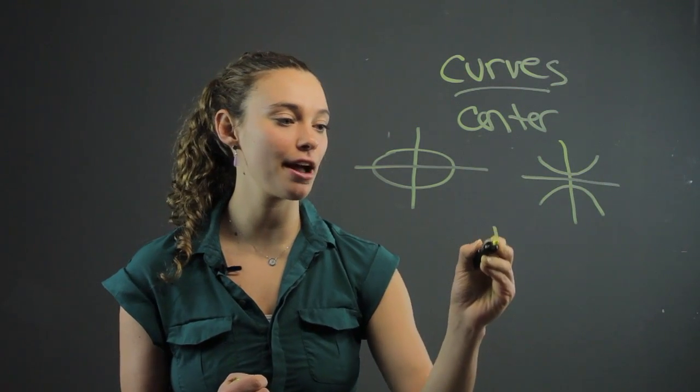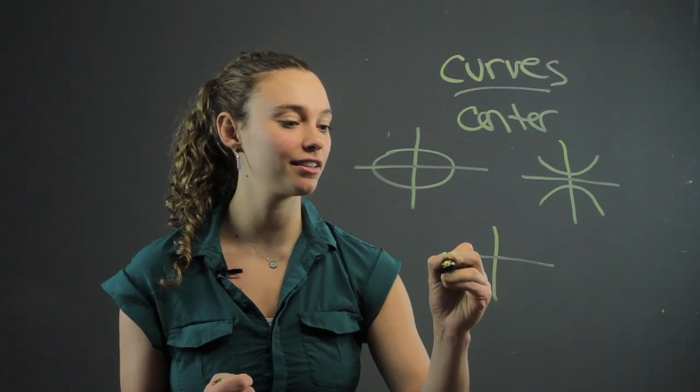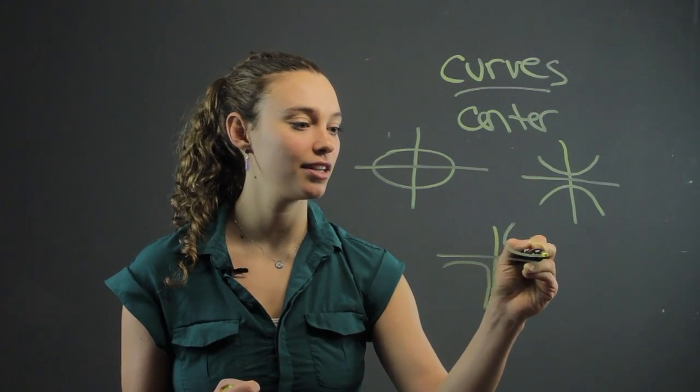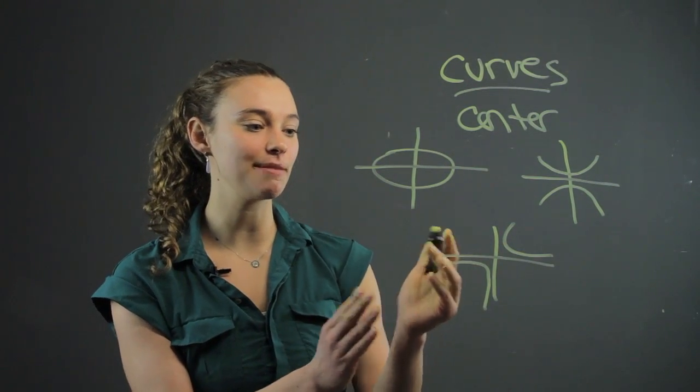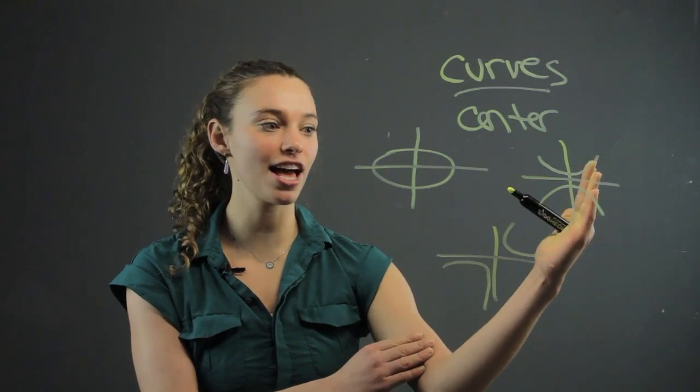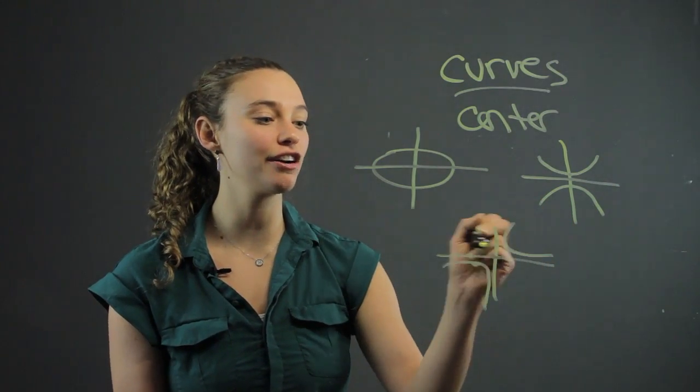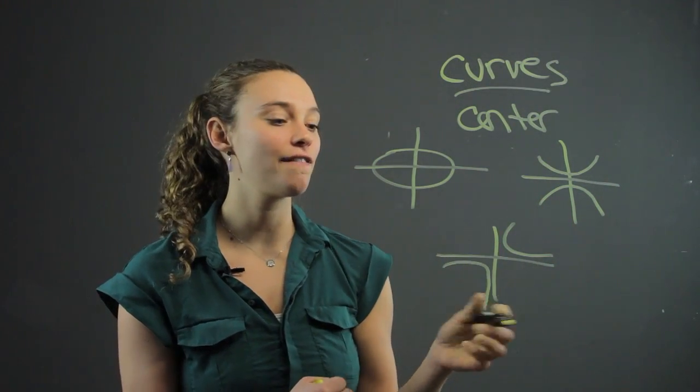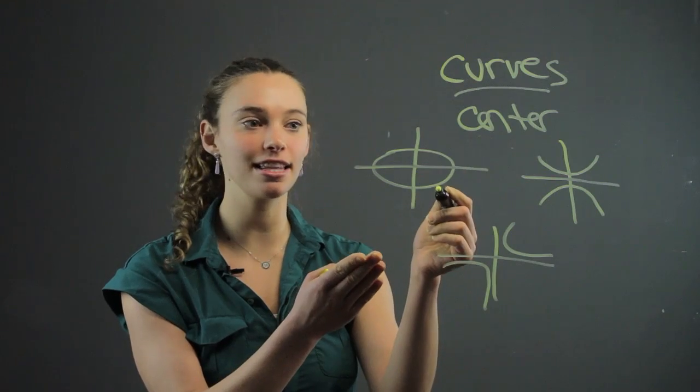But you could have a hyperbola that looks like this. And in this case, it is a function because it passes the vertical line test. But it's still a curve. There's still a center point, focal points, all of that, just like an ellipse has.